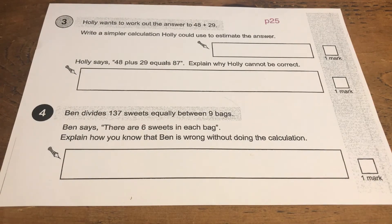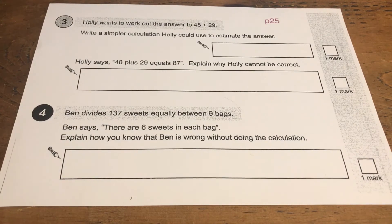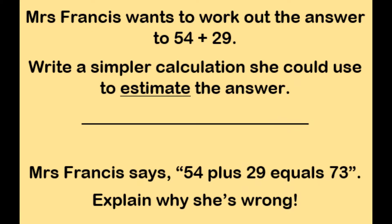I'm going to have a look at another example of this question, just with some different numbers, to be able to explain this to you. We will also look at the second bit of that question with the longer box. So this question says: Mrs. Francis wants to work out the answer to 54 add 29. Write a simpler calculation she could use to estimate the answer. That's the bit we're going to look at first.